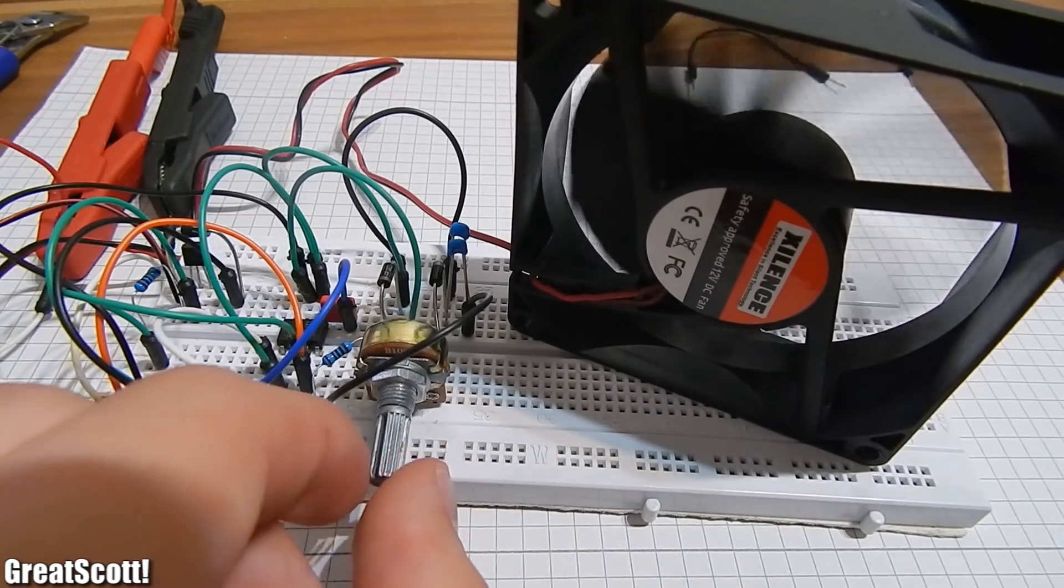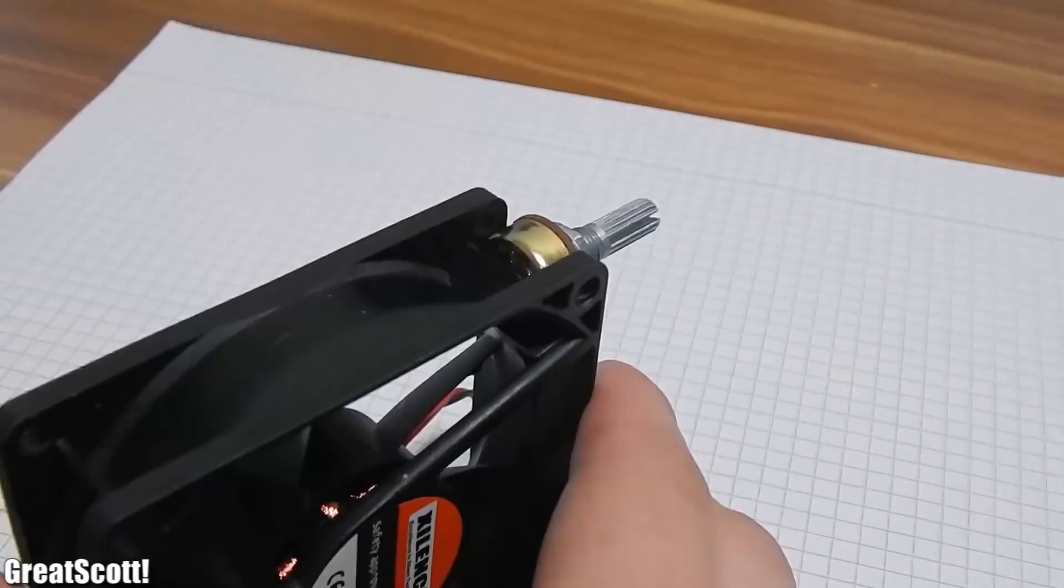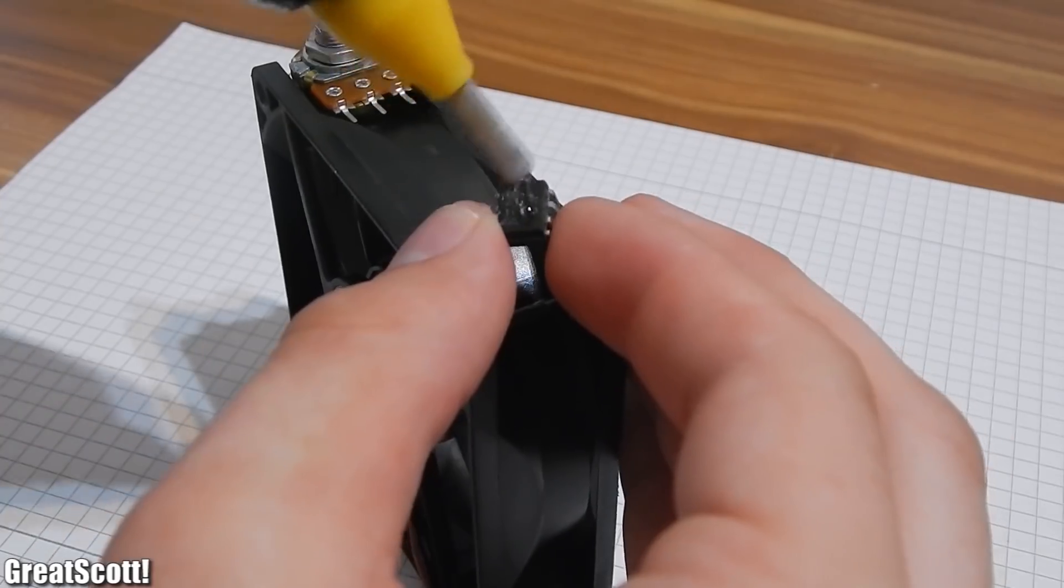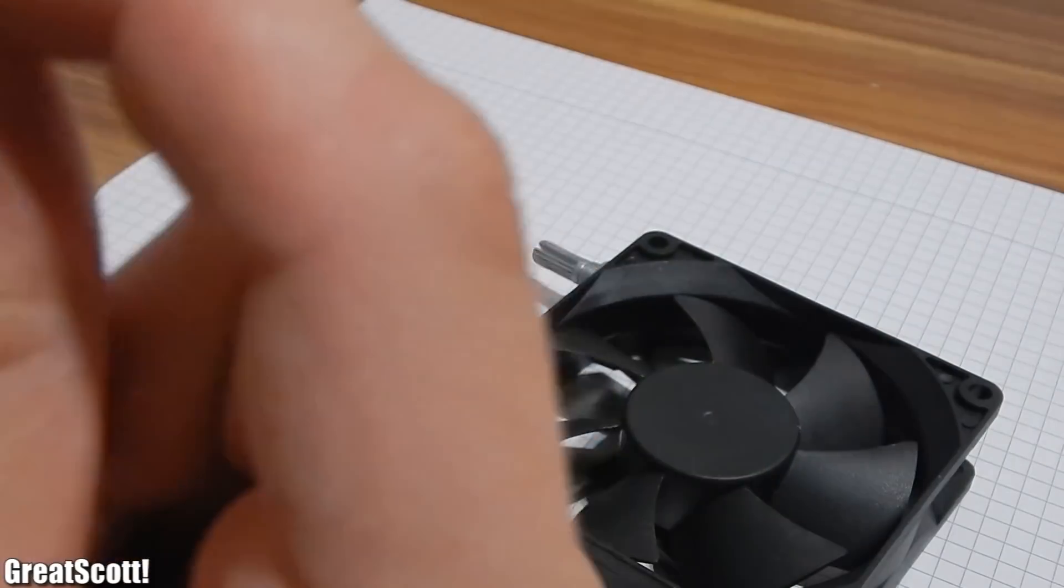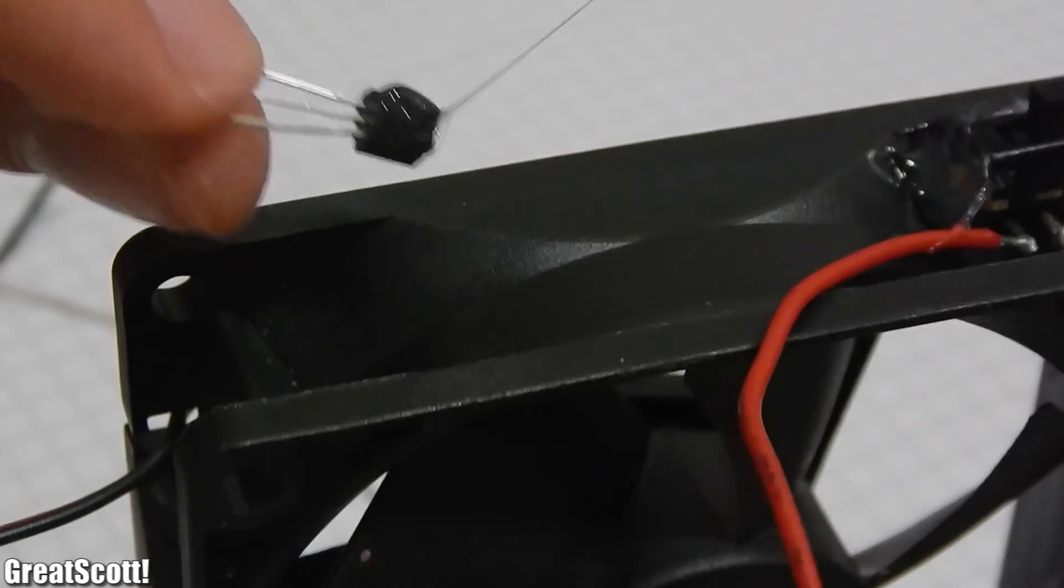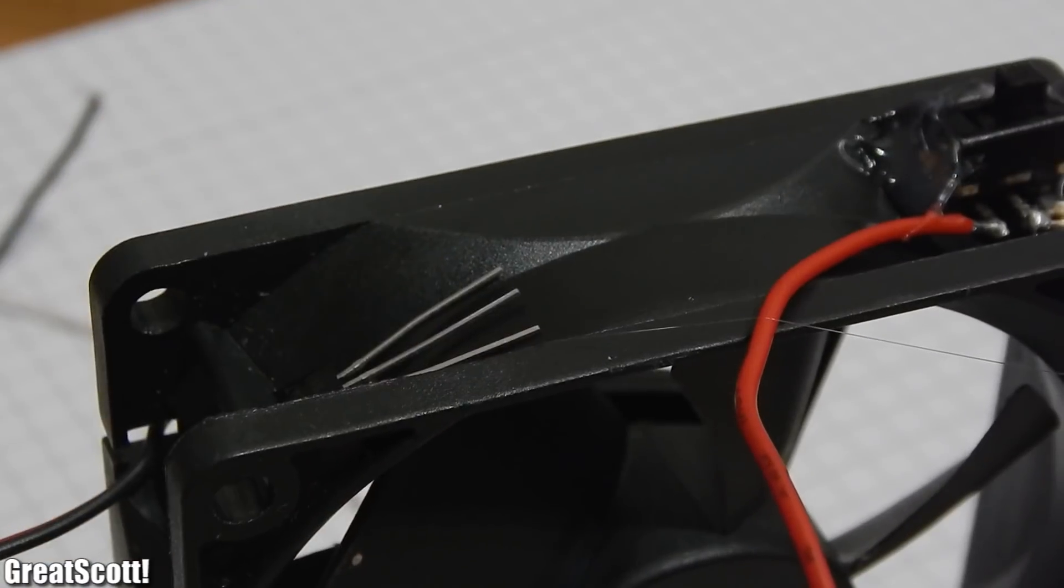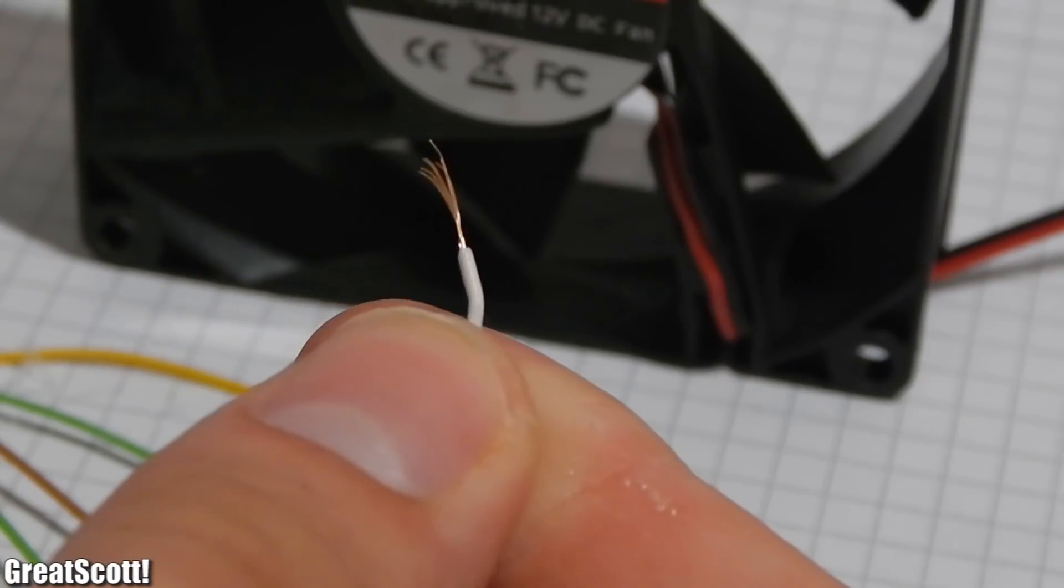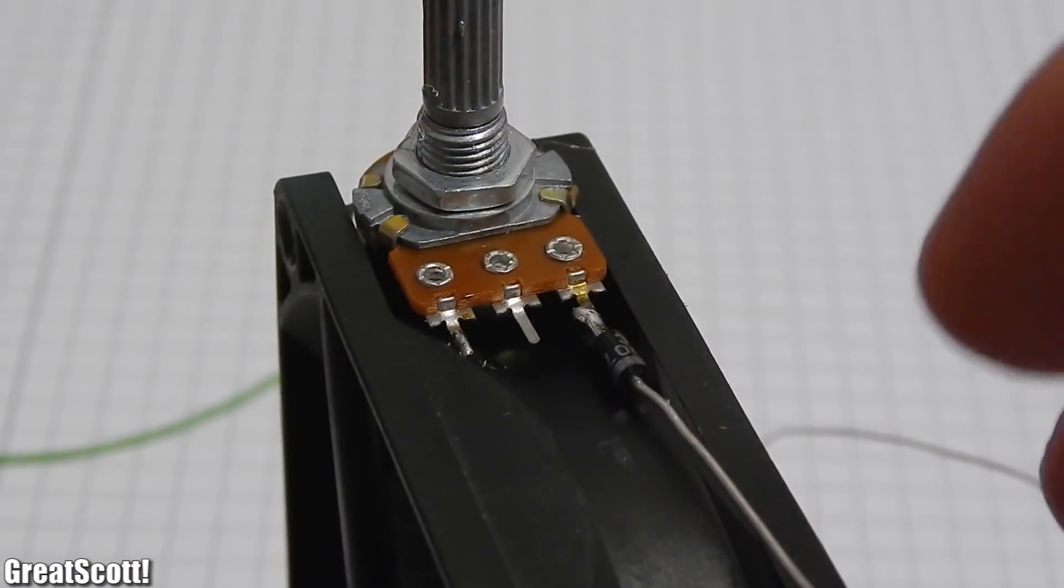So let's move the circuit to the fan. I want to keep everything pretty small, so I glued my main components to the fan side. In my case it is the potentiometer, the NE555, the switch, and the NPN transistor.